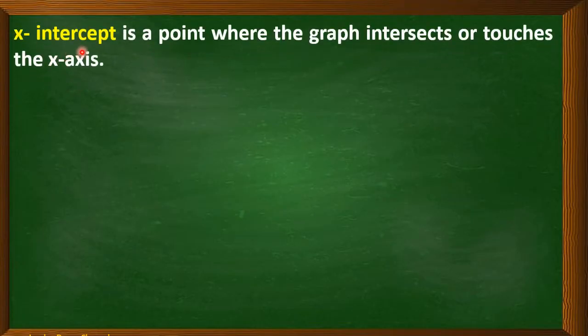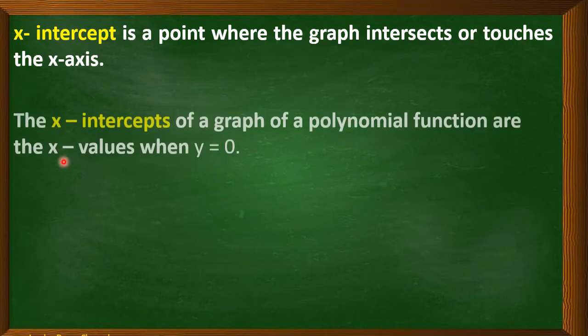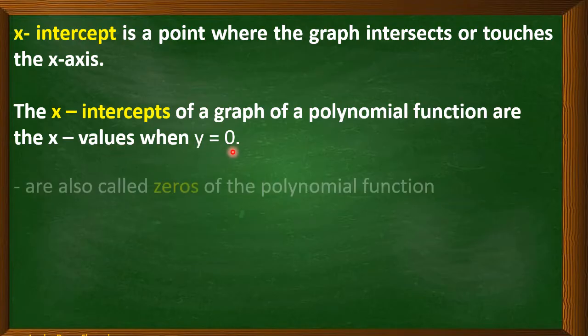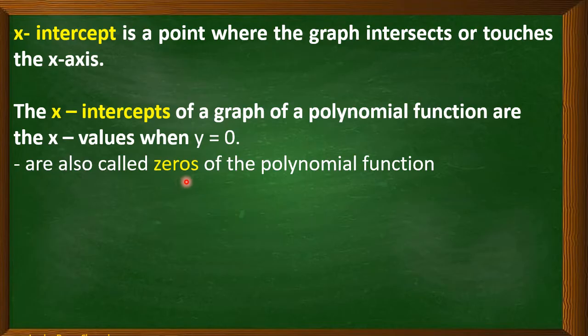Before we go further, let us first understand what an x and y-intercept is. The x-intercept is a point where the graph intersects or touches the x-axis. The x-intercepts of a graph of polynomial functions are the x values when y is equal to 0. They are also called the zeros of the polynomial function.